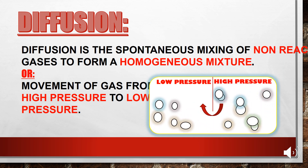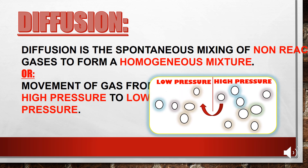So what is diffusion? As you can see here in the diagram, there is a container with two portions: a low pressure region and a high pressure region. The low pressure region has fewer gas molecules and the high pressure region has more gas molecules. The gas molecules start moving from the high pressure region towards the low pressure region to form a homogeneous mixture, and this process is called diffusion.